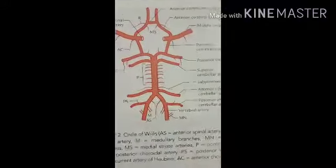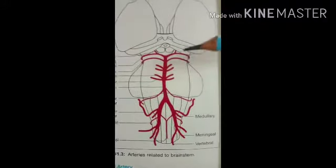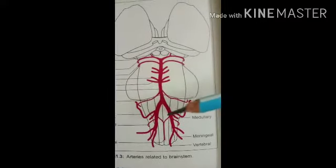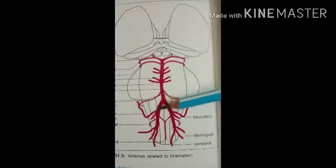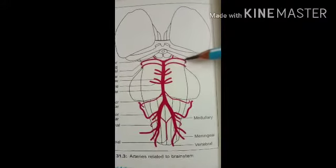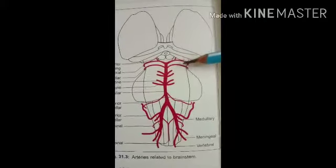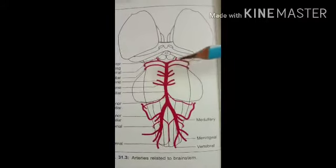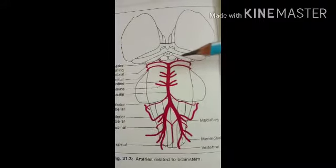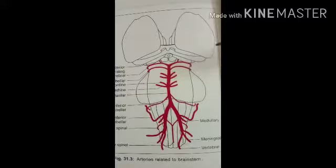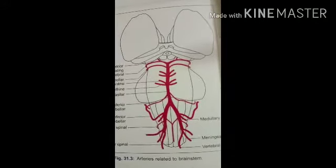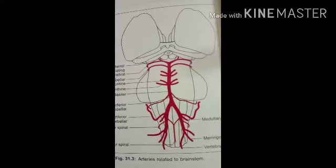Now let's see clinical applications related to the circle of Willis. First, congenital cerebral aneurysm: these occur mostly at sites where two arteries join in the formation of the circle of Willis — such as where the two vertebral arteries join, or where the internal carotid arteries enter the circle. The basic abnormality is a congenital deficiency of the tunica media — the elastic tissue within the artery is absent — and the aneurysm appears berry-shaped, so it is called a berry aneurysm.